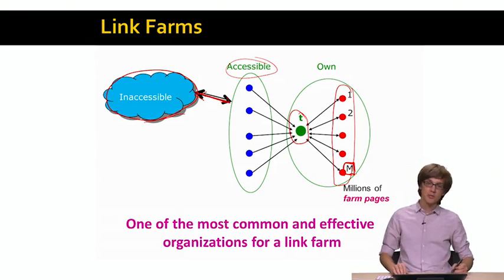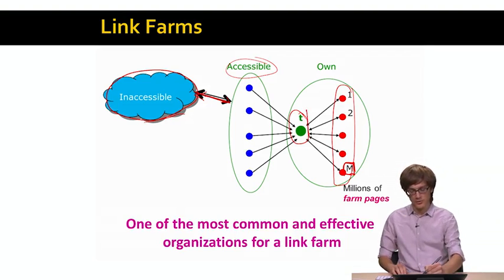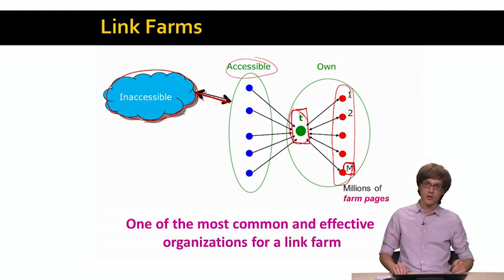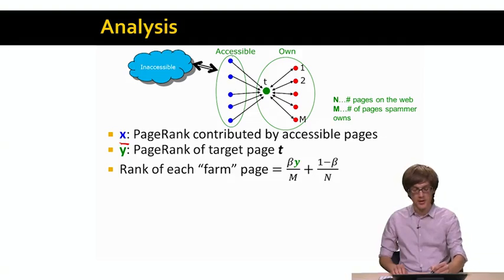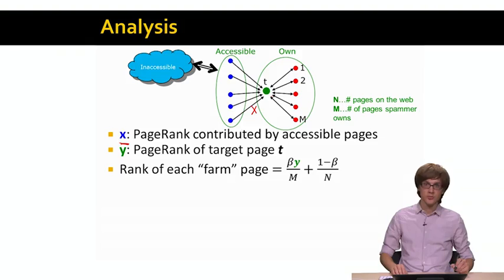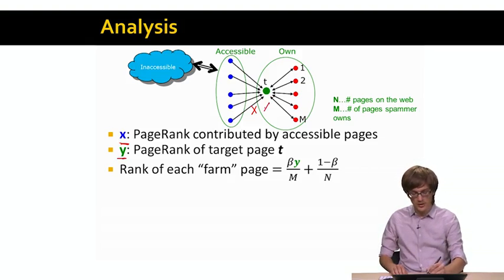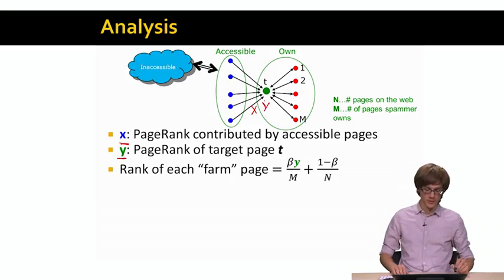So now, this is actually one of the most common and most effective link farm topologies. Now, let's start to compute and let's try to convince ourselves. What is the page rank score of node T? So basically, the page we want to boost its page rank score. So to do this, we will do the following. Let's use the symbol x to denote the page rank score contributed by all the accessible pages, here denoted as blue nodes, and how much page rank they contribute to T. And let's use y to be the page rank score of node T.